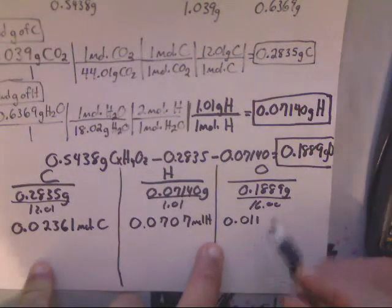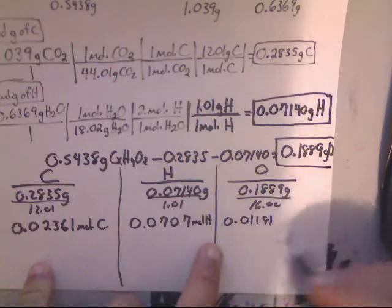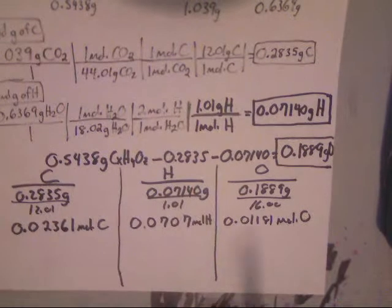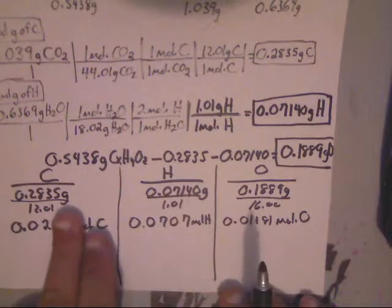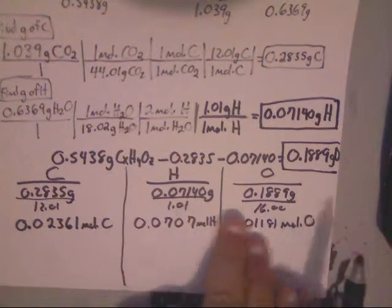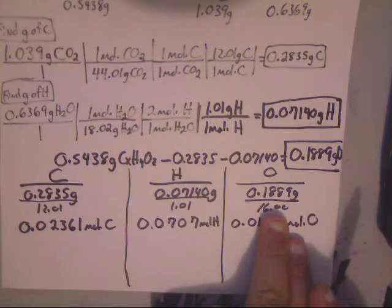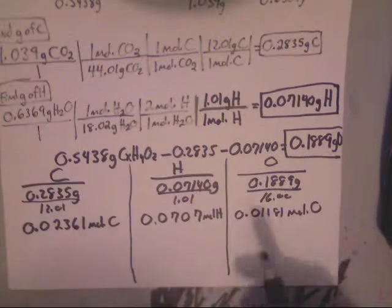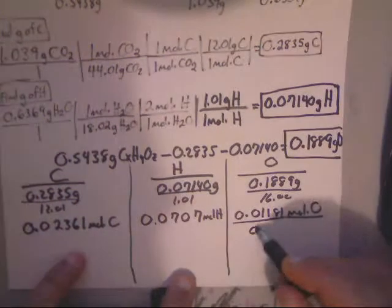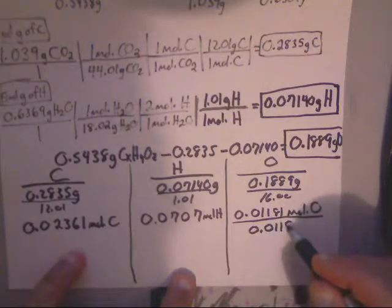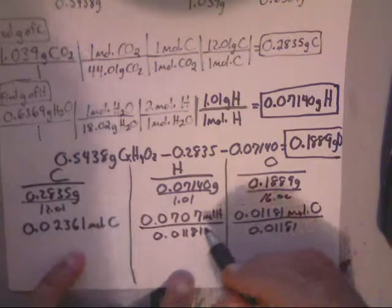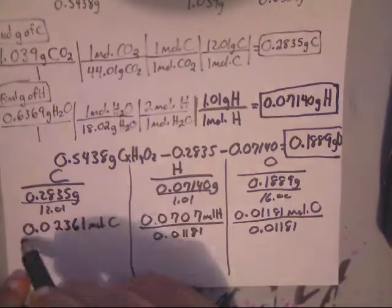Now, let's see which of these is the smallest. This is 0.02. This is 0.07. And this is 0.01. This 0.01 is the smallest. So I'm going to divide them all by this 0.1181. So this is going to be 0.01181 divided by 0.01181 and divided by 0.01181. And of course, that gives me exactly one option there.